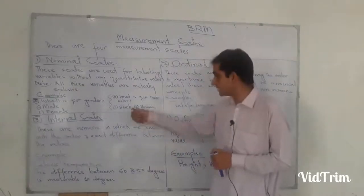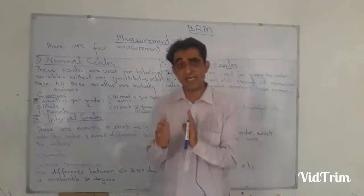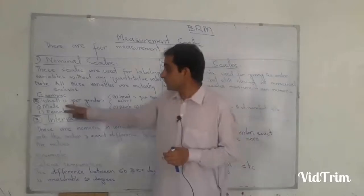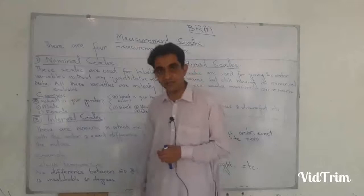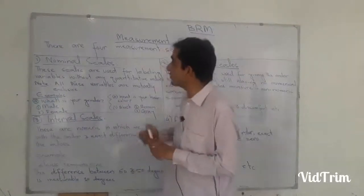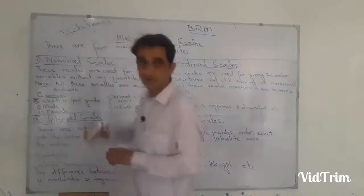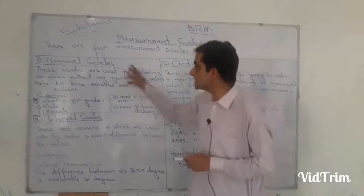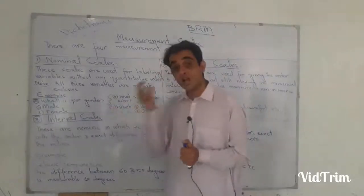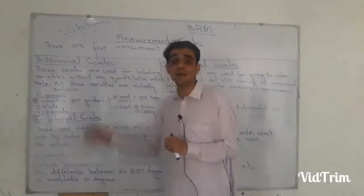Another example is: what is your hair color — black, brown, gray? These are just labels, just names, without any measurement, numerical, or quantitative value. These are called nominal scales. When there are exactly two options, such as male or female, those are called dichotomous values — where we have just two options. So nominal scale is just a label with no quantity, no measurement, and the variables are mutually exclusive.